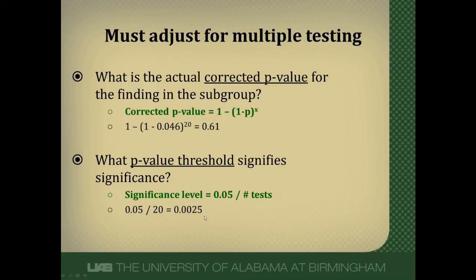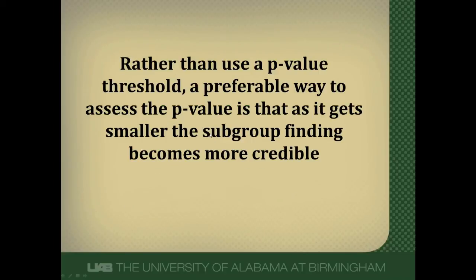One thing to think about: instead of using a plain old p-value threshold of 0.05 or 0.01, just use the p-value such that as it gets smaller and smaller, it's more likely that a subgroup finding becomes more credible. Ignore a fixed threshold per se, and just hold it to a standard — the smaller the p-value, the more likely the subgroup finding.